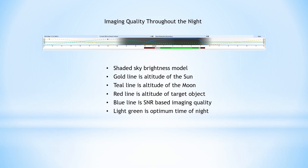We could make a plot showing how the SNR varies during the night, which can then be used to tell us the time of night that we can achieve the highest quality images. This Sky Tools graphic tells us everything we need to know. The background of the graphic is shaded by our sky-brightness model.